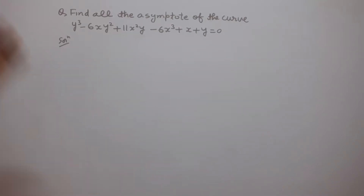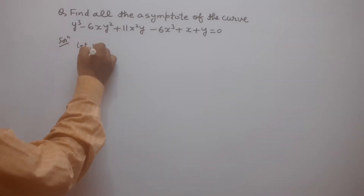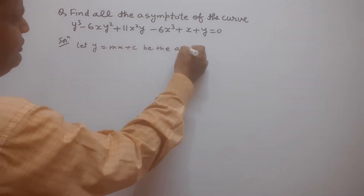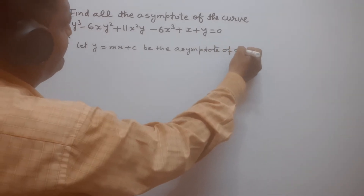Students, in this question we have to find all the asymptotes of the given curve. The given curve is the algebraic curve which is y³ - 6xy² + 11x²y - 6x³ + x + y = 0. First we suppose that y = mx + c is the asymptote of the given curve.